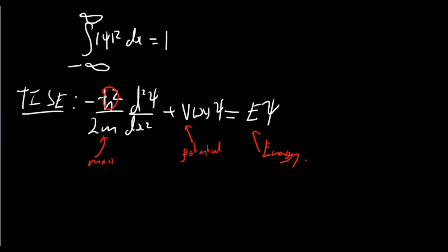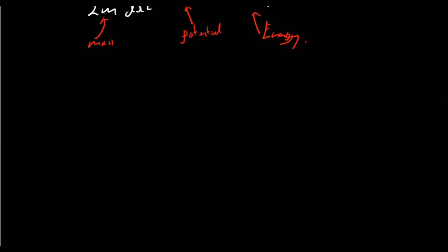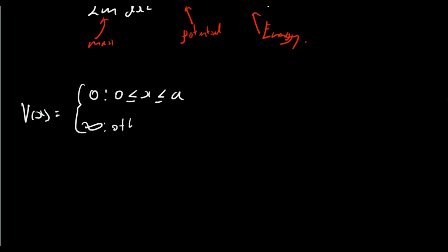We can't just solve this equation for any given potential — we need to specify a particular potential. The one we're looking at today is the infinite square well. This is a potential that is equal to zero when x is in the range zero to a, where a is just some constant.